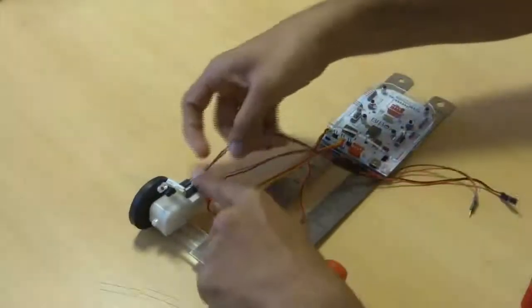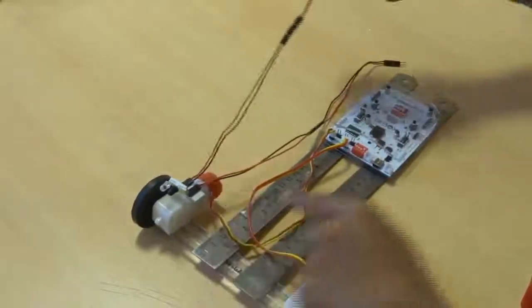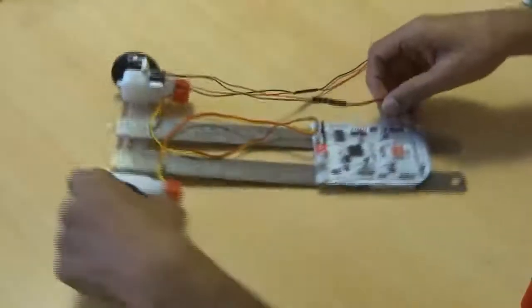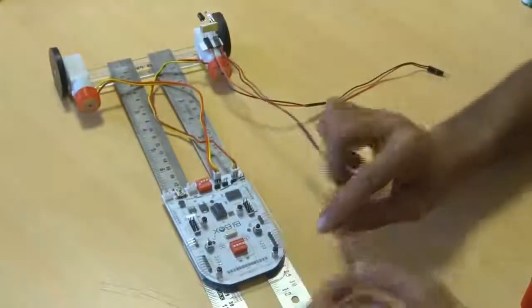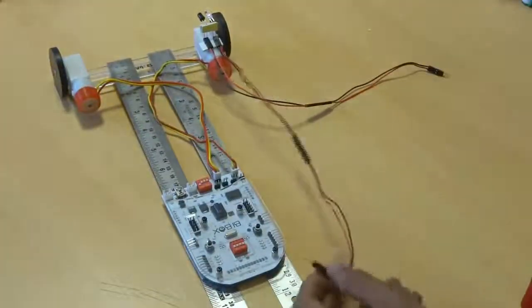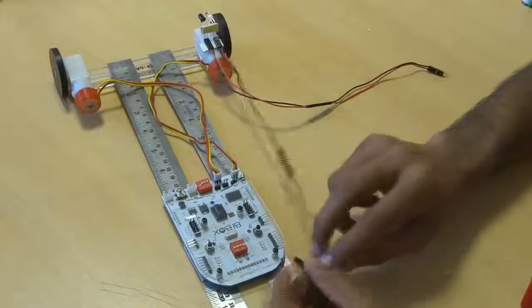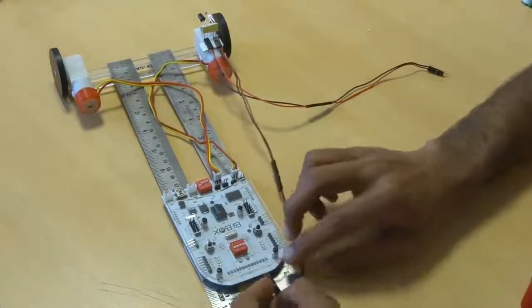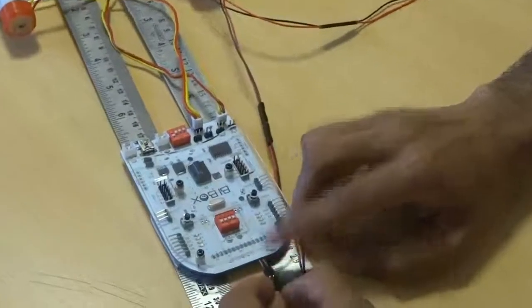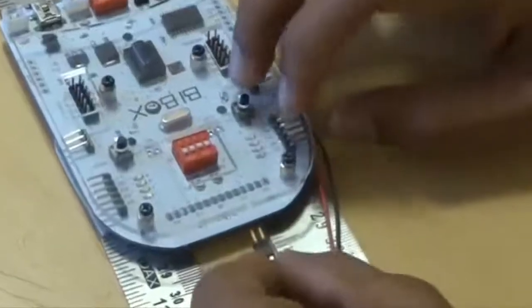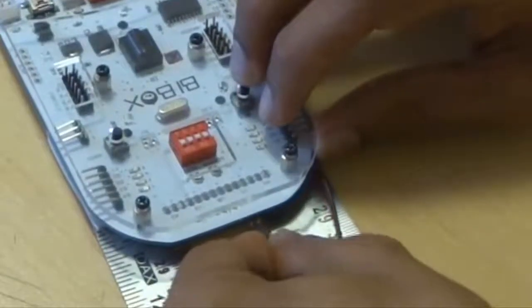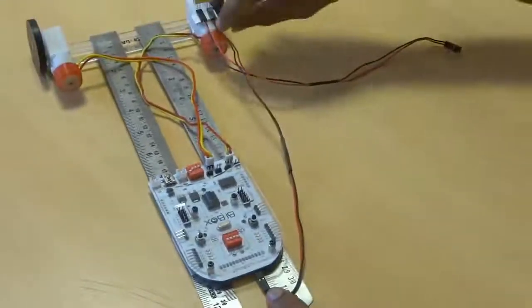Once you're done, take the transmitter patch cord, patch cord of the transmitter. And place it, to V1, V2, or V0. Positive to the, red wire to the positive, and black wire to the negative. So, V1 is here. So, the transmitter is connected.